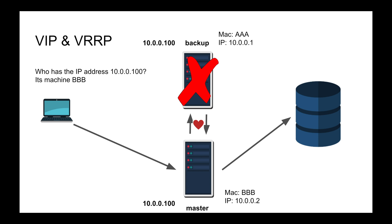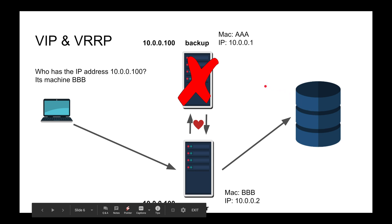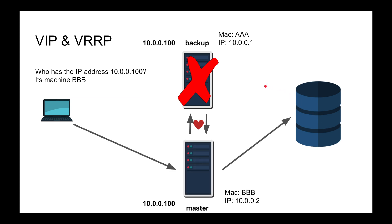In a high availability setup you might still see some stale clients that still think 10.0.0.100 has MAC address AA — they will still send requests to that dead node until their ARP table gets updated with the new MAC address. Essentially, they will forward requests to that dead node for that brief window.